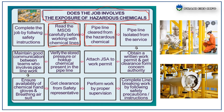Then the pipeline is isolated from service. Obtain a written work permit and get clearance from the concerned authority. Attach the JSA to the work permit, verify the stored pressure or hold-up chemical present in the pipeline, and maintain good communication between teams involved in the pipeline work.